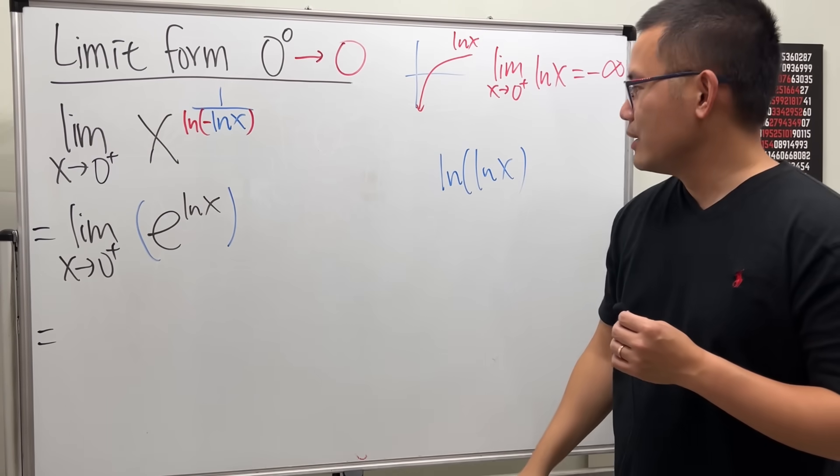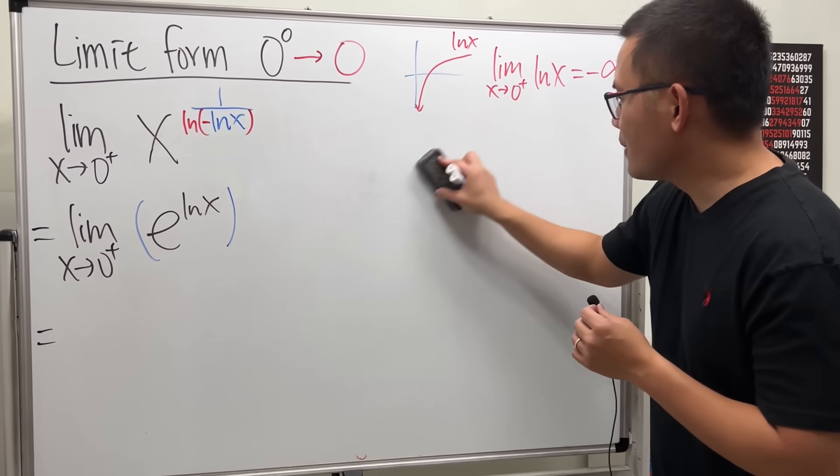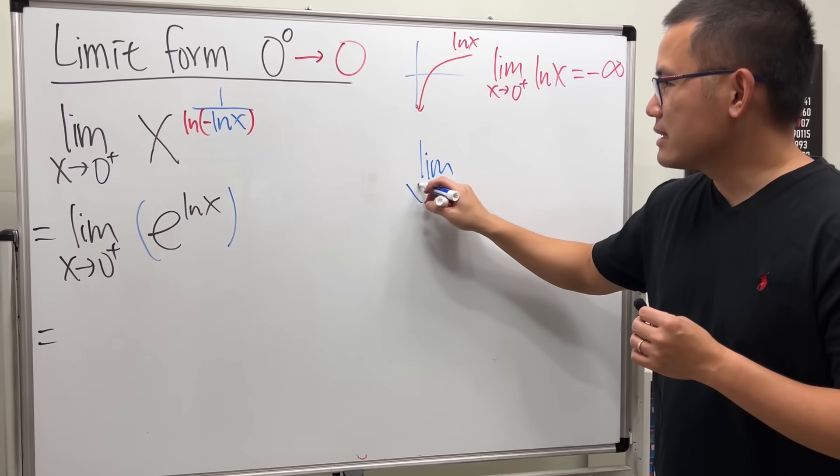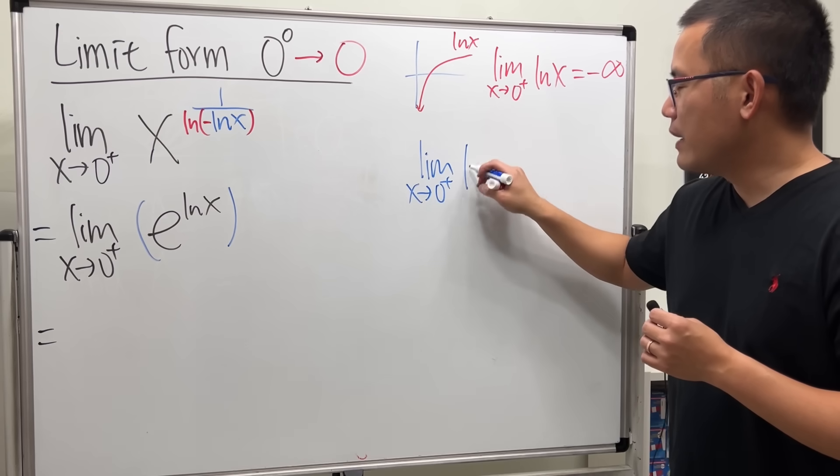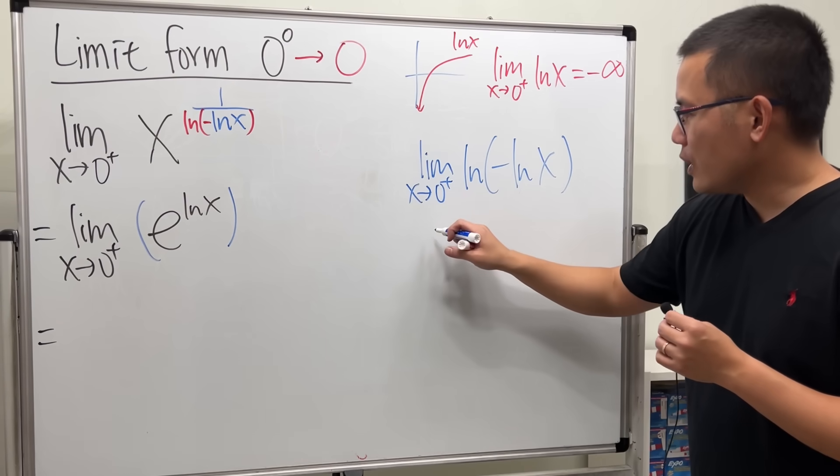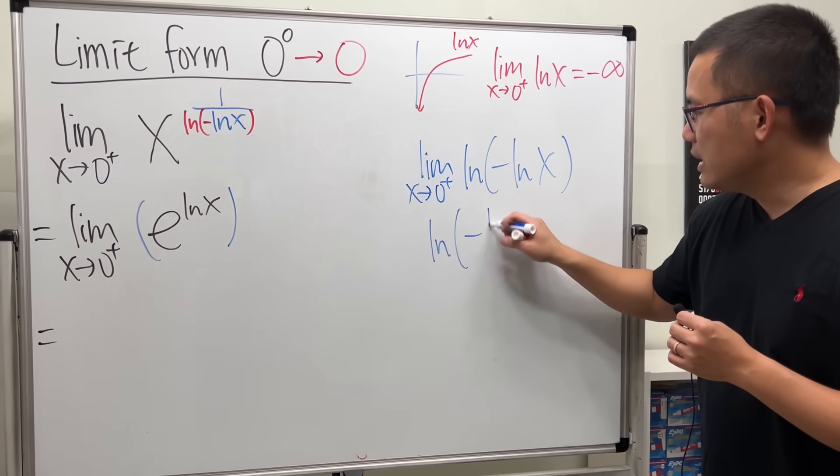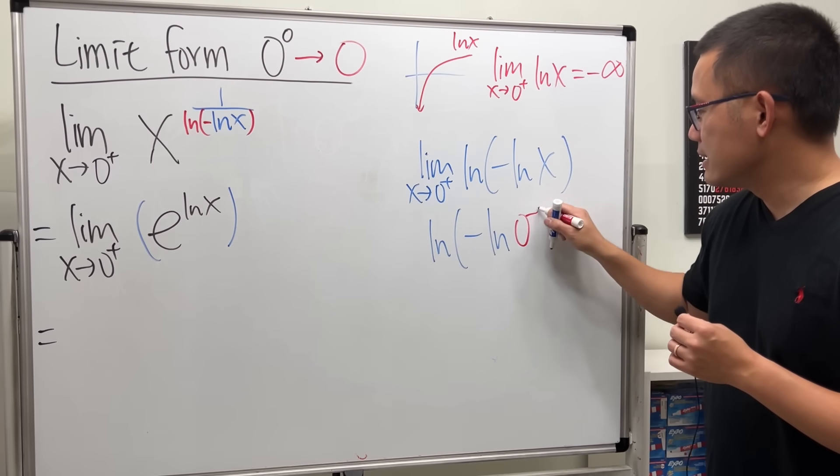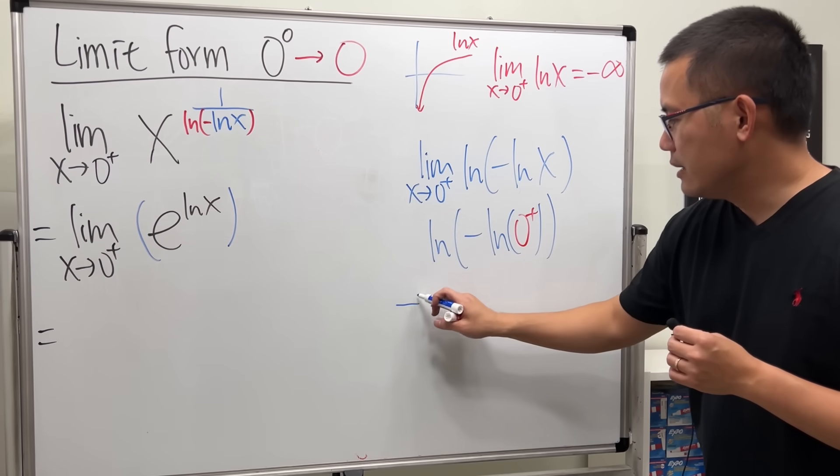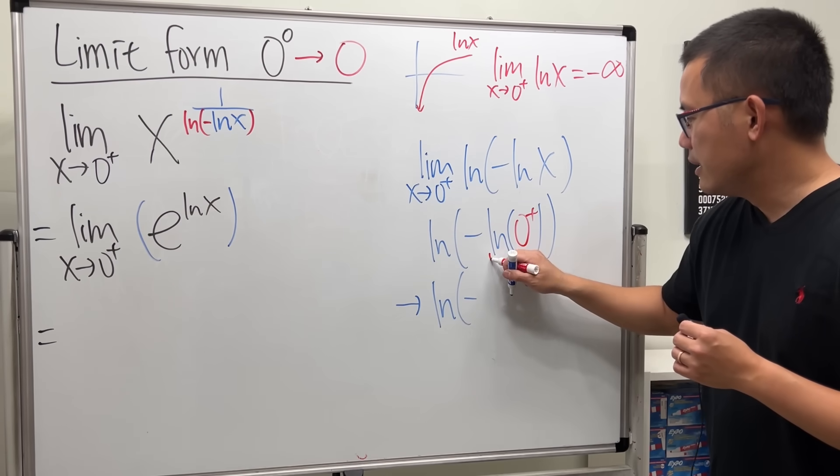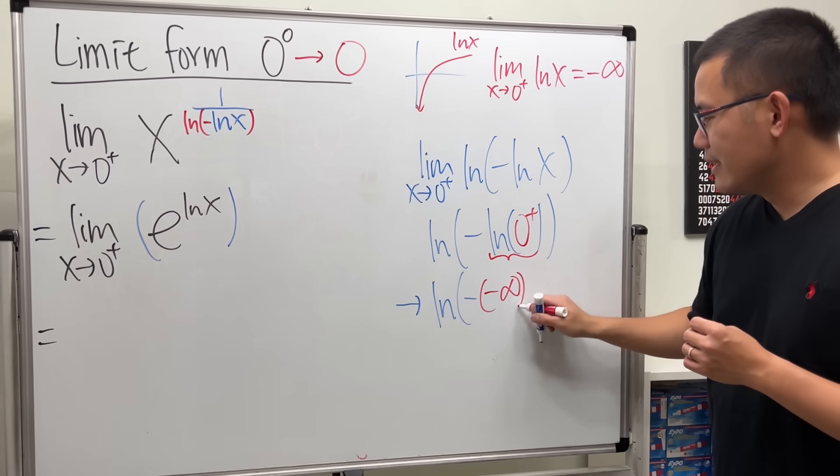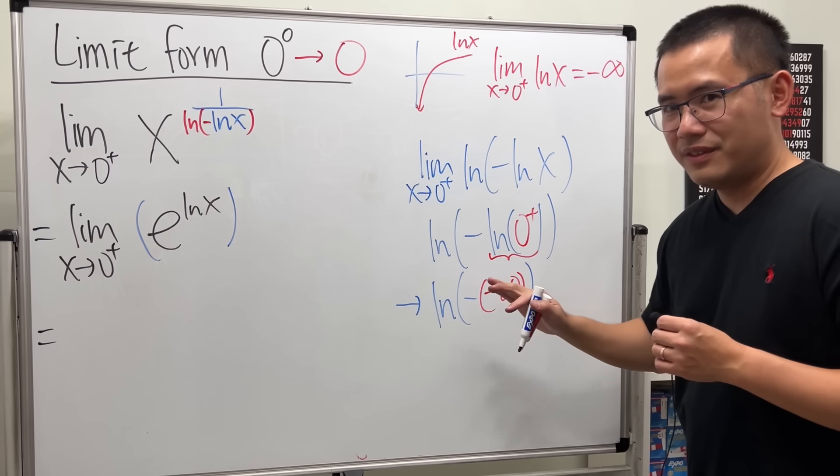So have a careful look right here. If I take the limit as x approaching zero plus of ln of negative lnx, let's do this on the side. We will get ln of negative ln zero plus, right? Okay, this right here will approach ln of, this is negative, this right here per our discussion is negative infinity.